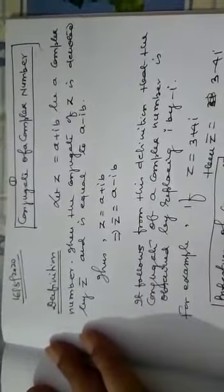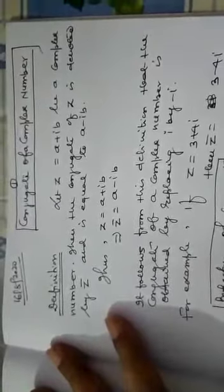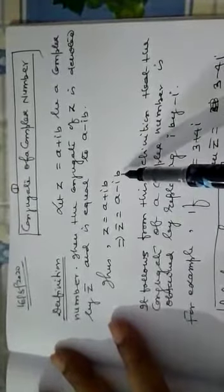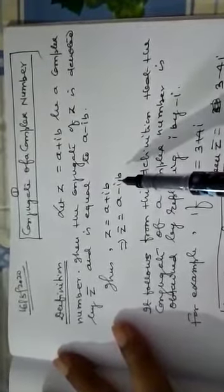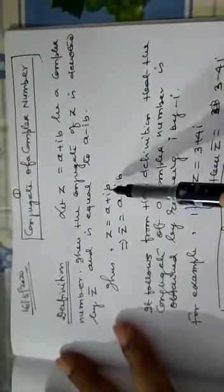So in this way we can find the conjugate of a complex number. In short, we can remember it this way: if z is equal to a plus ib, then its conjugate will be a minus ib. In a conjugate, the sign between the real and imaginary part will be opposite.